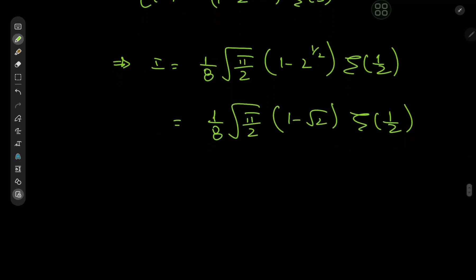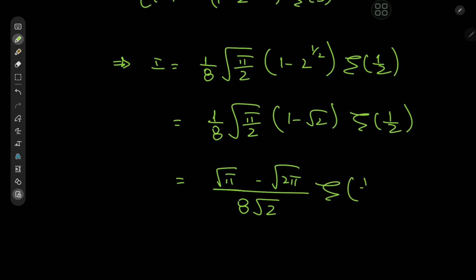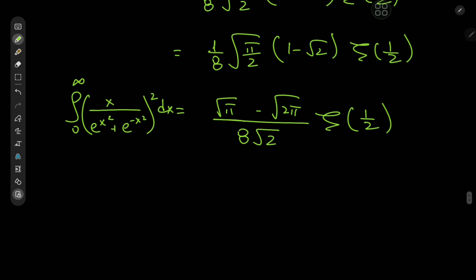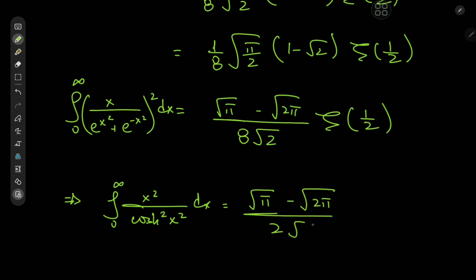Wow, that is pretty cool. So we have root pi minus root 2 pi divided by 8 times root 2 times zeta of 1 half. This is the result for the integral from 0 to infinity of x divided by e to the x squared plus e to the negative x squared, whole thing squared, dx. And if we multiply the result by 4, we get the integral from 0 to infinity of x squared divided by cosh squared of x squared, equal to root pi minus 2 times root pi divided by 2 root 2 times zeta of 1 half. A very exotic result indeed.